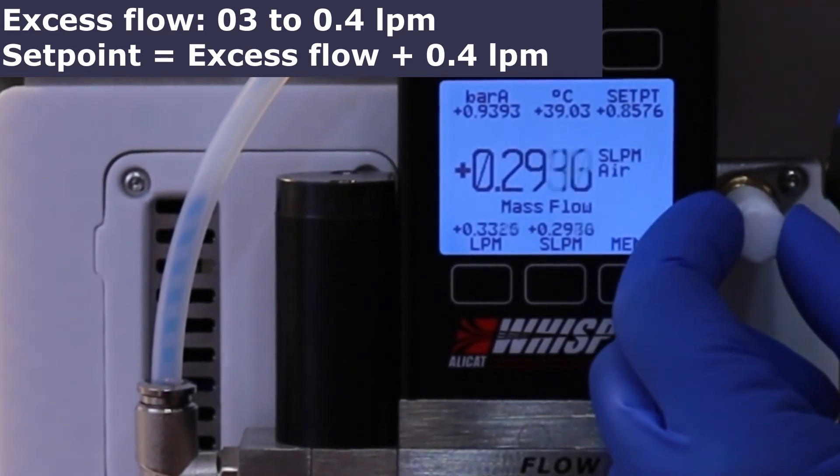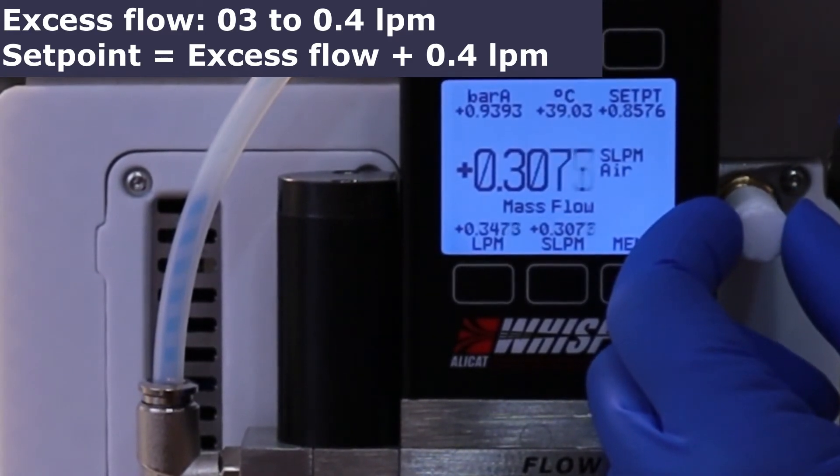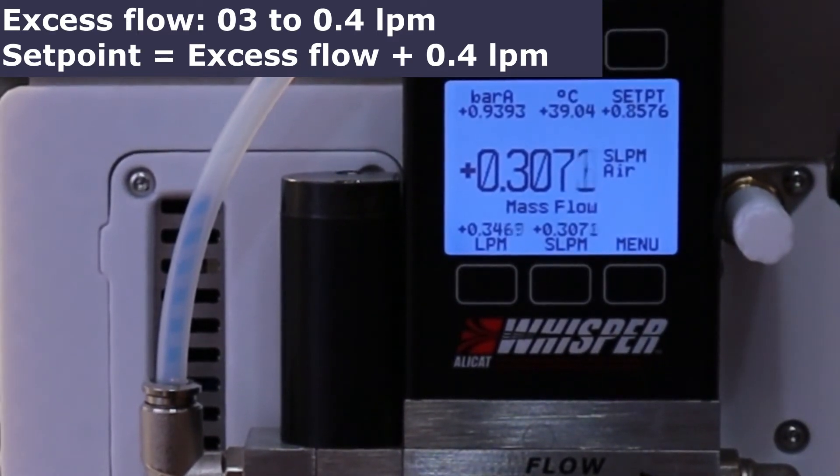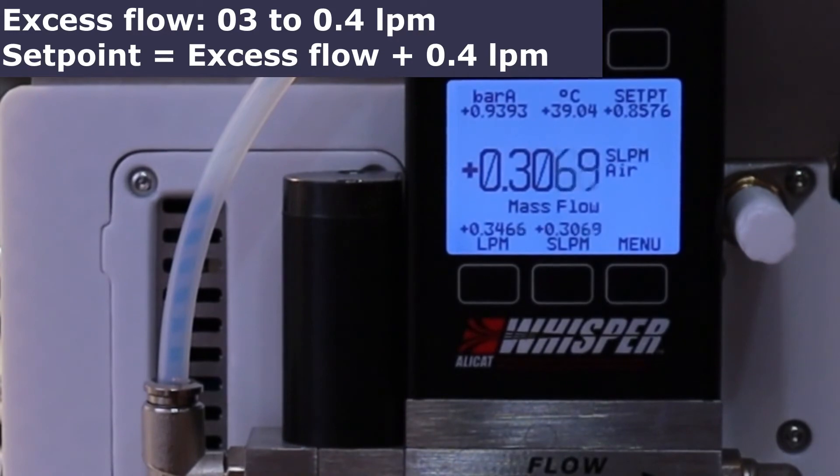To compensate for variations in the excess gas, make sure that the set point is whatever excess gas reading you have, plus 0.4 liters per minute.